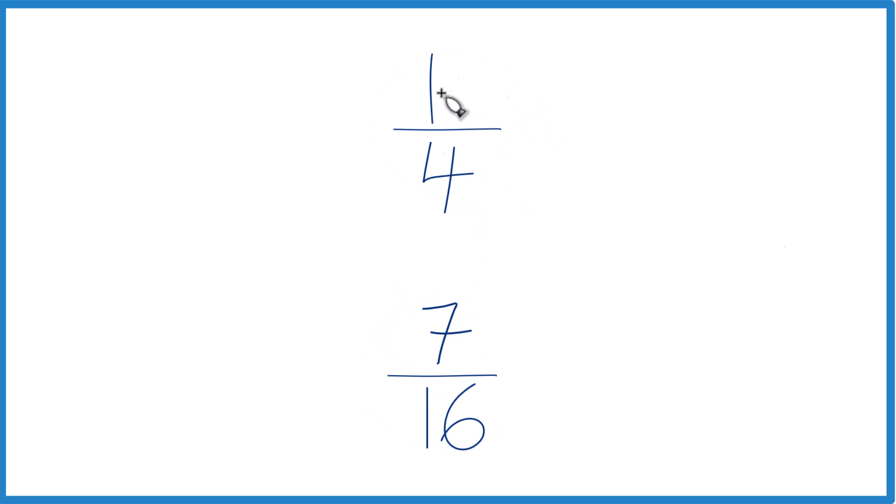You could just take a calculator, divide 1 by 4, get a decimal, divide 7 by 16, get a decimal. And if you did that, you would find that 7 sixteenths is greater than 1 fourth.